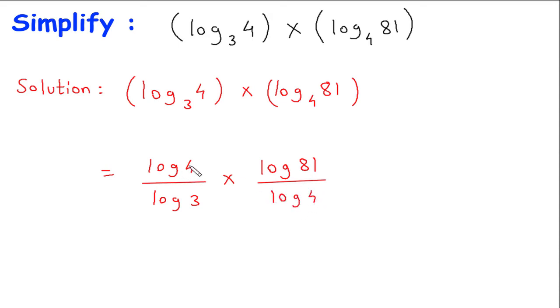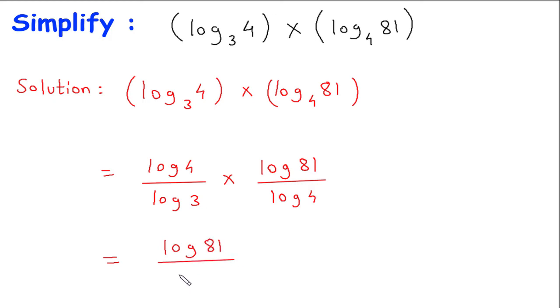Now this log of 4 and this log of 4 will get cancelled. So this will be log of 81 divided by log of 3.